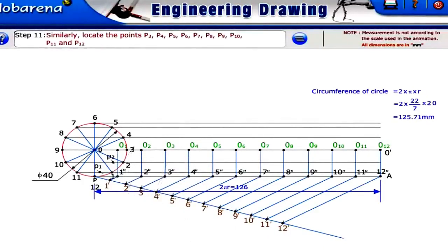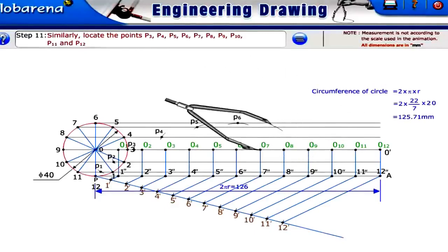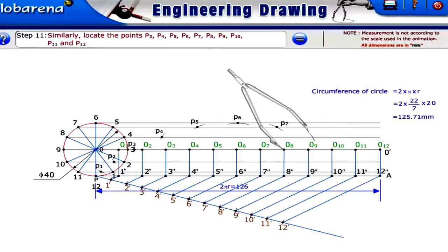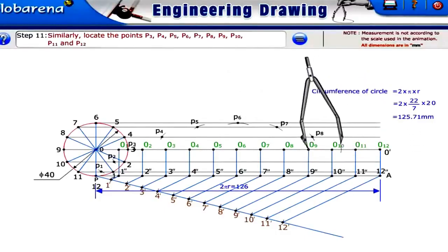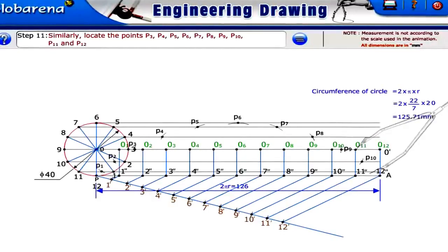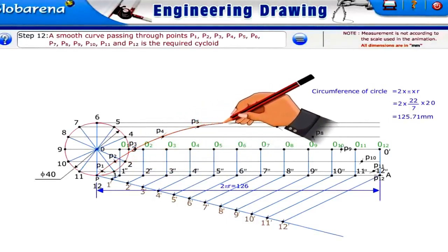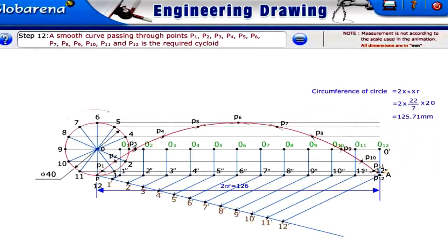Similarly, locate the points P3, P4, P5, P6, P7, P8, P9, P10, P11, and P12. A smooth curve passing through points P1, P2, P3, P4, P5, P6, P7, P8, P9, P10, P11, and P12 is the required cycloid.